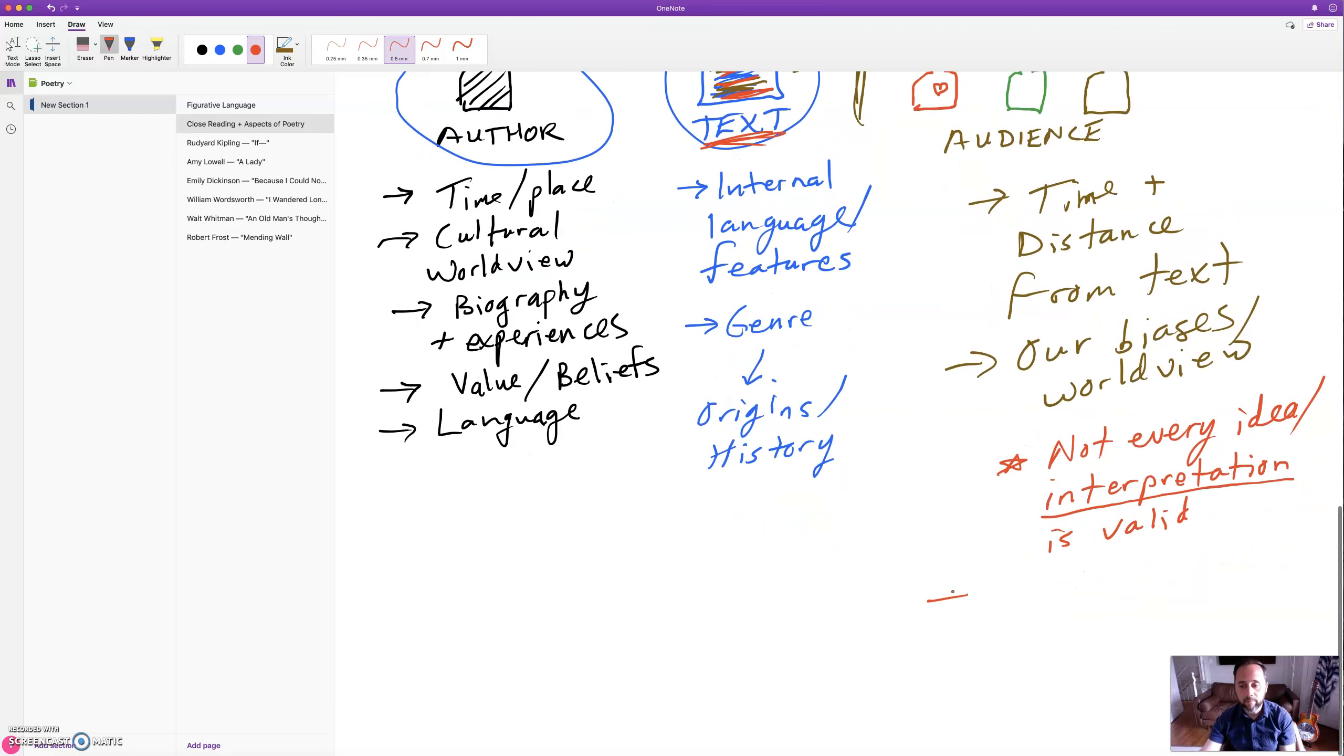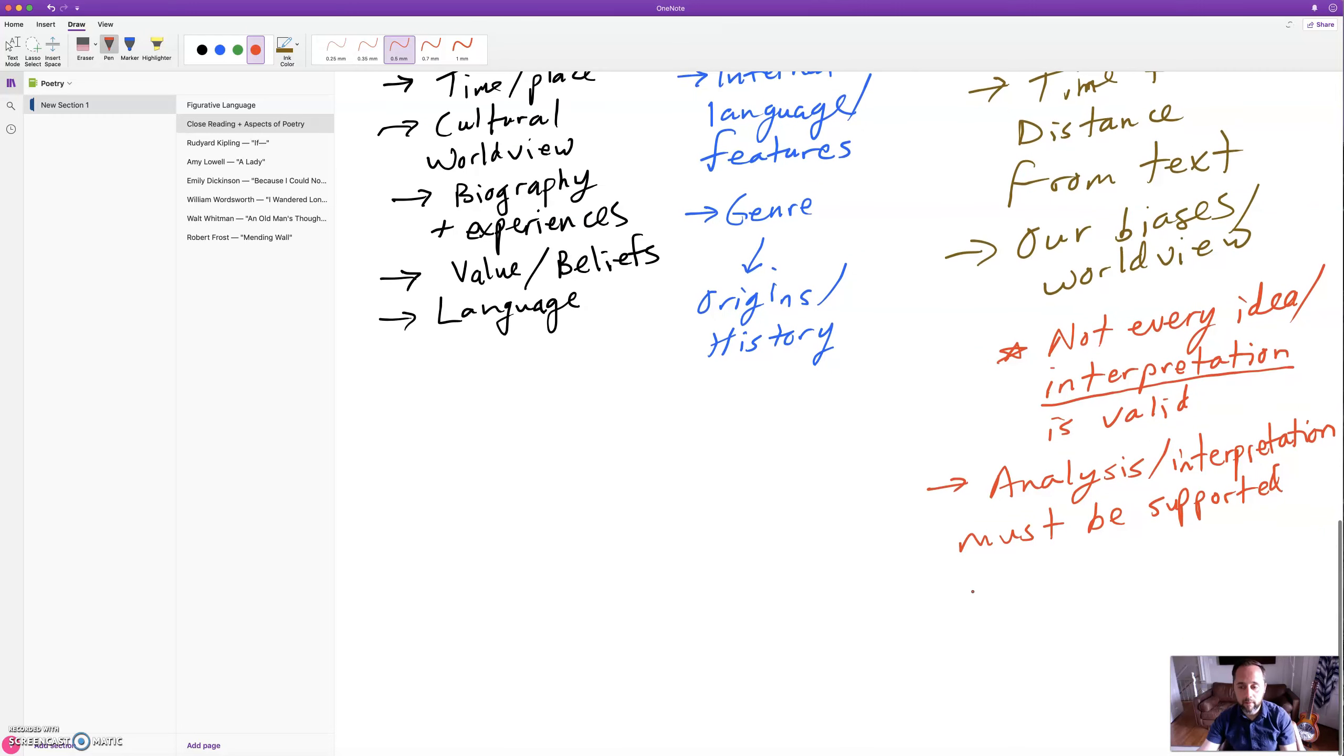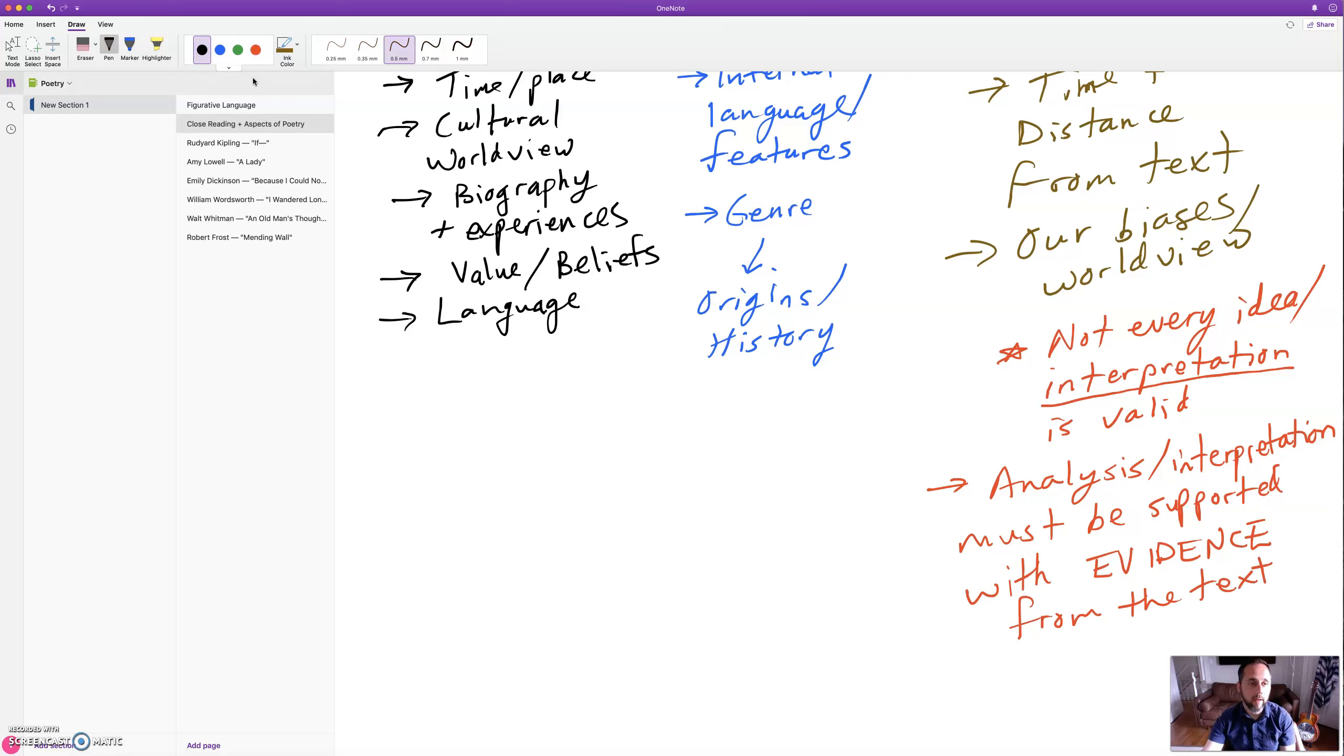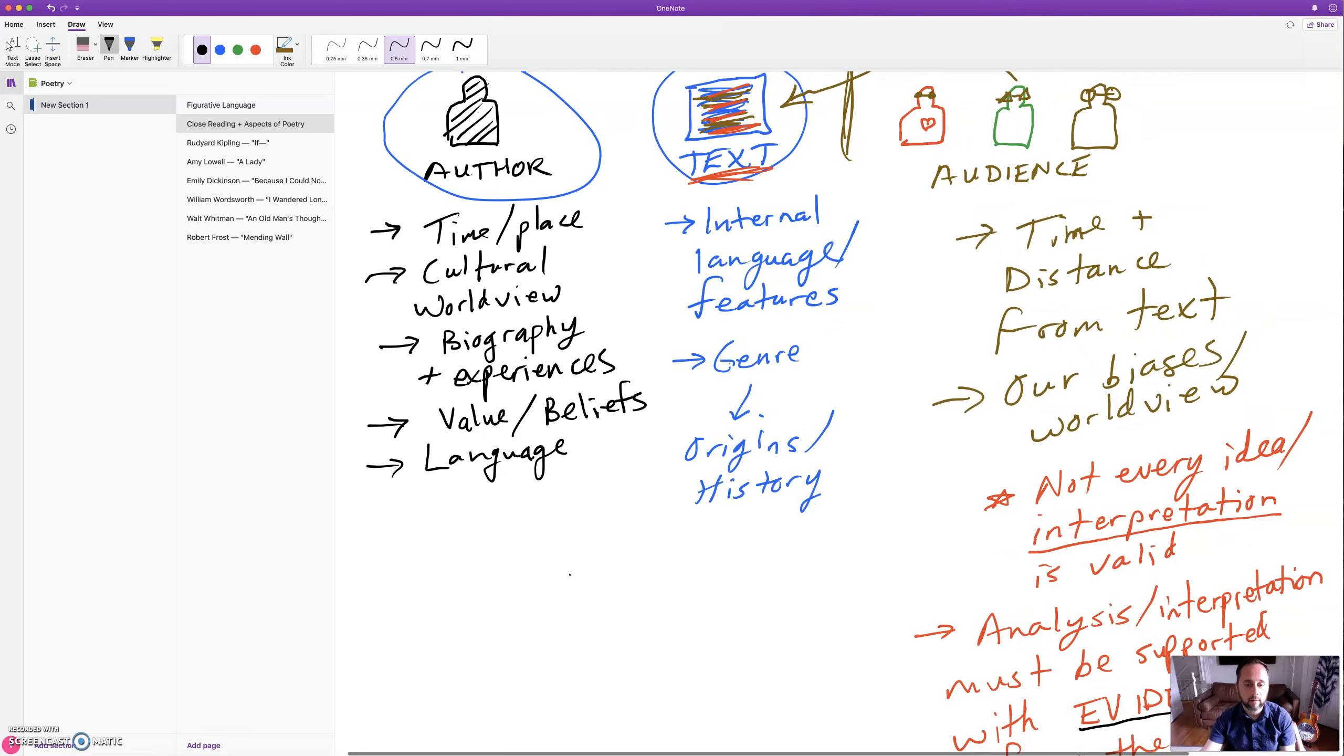In a sense, our analysis and our interpretation of the text must be supported with evidence from the text. If we don't have this evidence, that's a problem. And that evidence has to be consistent.